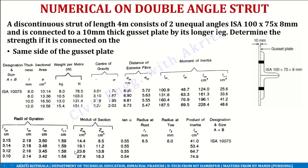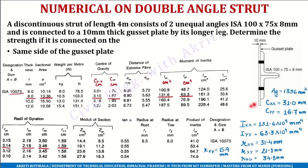First, we will use steel tables to note down the details of the angle 100 by 75 by 8 mm. The gross area is 13.36 cm² (i.e., 1336 mm²). CXX is 3.10 cm, CYY is 1.87 cm. The moment of inertia IXX is 131.6 cm⁴ and IYY is 63.3 cm⁴ — we will convert these to mm⁴. The radius of gyration: Rxx = 3.14 cm, Ryy = 2.18 cm, Ruu = 3.48 cm, and Rvv = 1.59 cm.